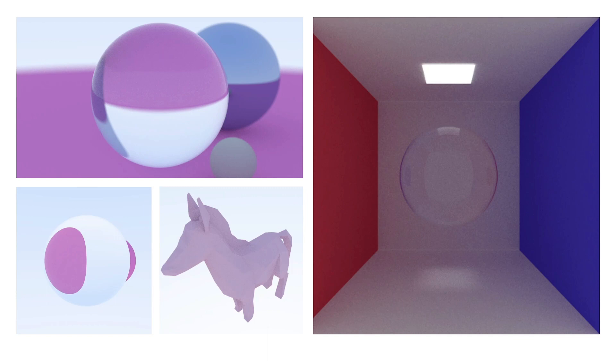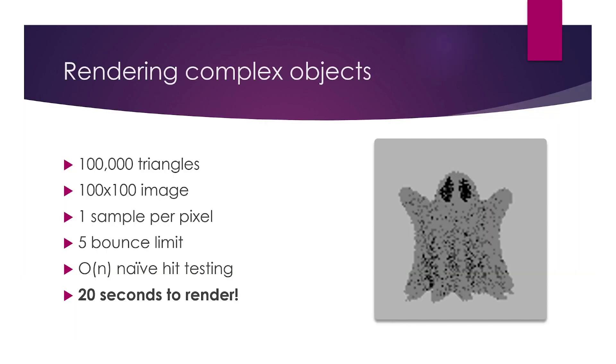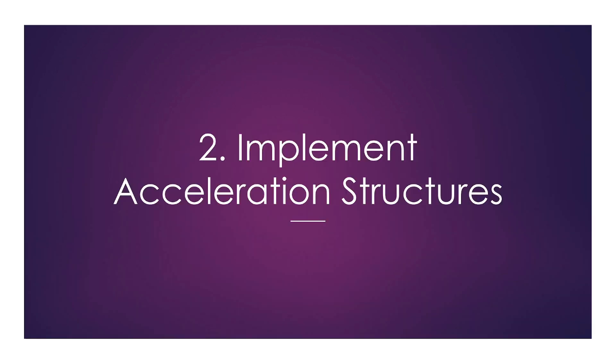This is a great ray tracer until we give it complex objects. Here's an example of an object with 100,000 triangles, and we're only rendering it out to a 100 by 100 image with one sample per pixel and five bounces maximum per ray. We are testing the scene with O of N, so linear, naive hit testing. And this took 20 seconds to render. That is way too long. So we moved on to step two, implementing acceleration structures.